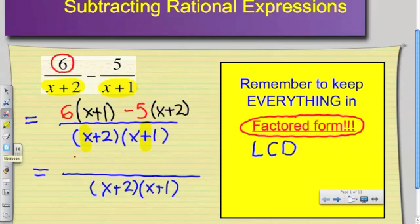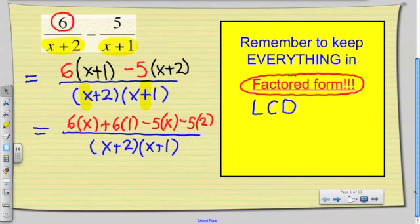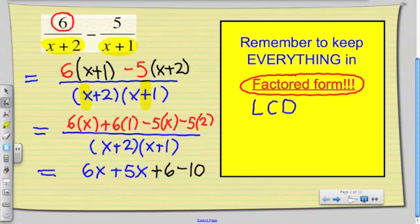So I have 6 multiplied by my x, and then I have positive 6 multiplied by 1. Then I have a negative 5 multiplied by x, and negative 5 multiplied by positive 2. When we do that, I'm going to rearrange so my like terms are next to each other. 6x and positive 5x, and then I have the number positive 6, and negative 5 times 2 is negative 10, all over my denominator of x plus 2, x plus 1.